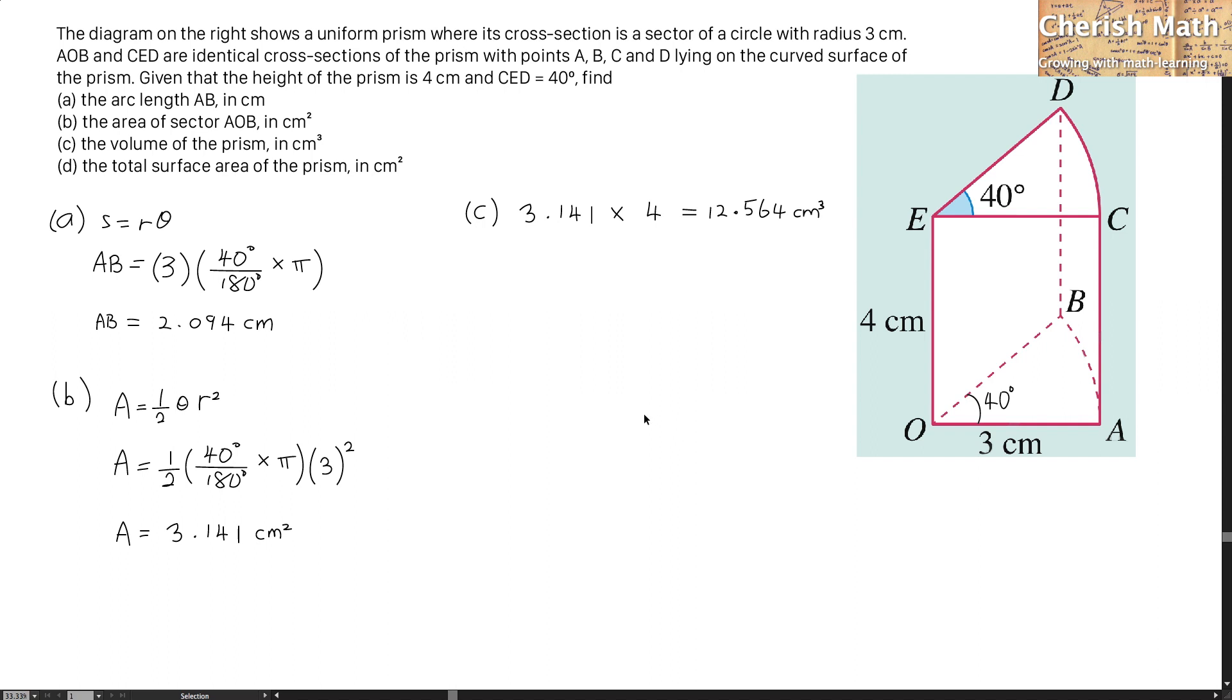To solve part D for the total surface area, I will sum up each part of the surface areas that I label here. The answer is 38.658 cm².